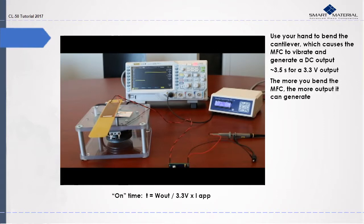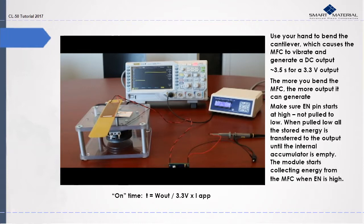The on time can be calculated with this equation. Make sure to note that the enable pin starts at active high not pulled to low. When pulled low all the stored energy is transferred to the output until the internal accumulator is empty. The module starts collecting energy from the MFC when the enable pin is high.